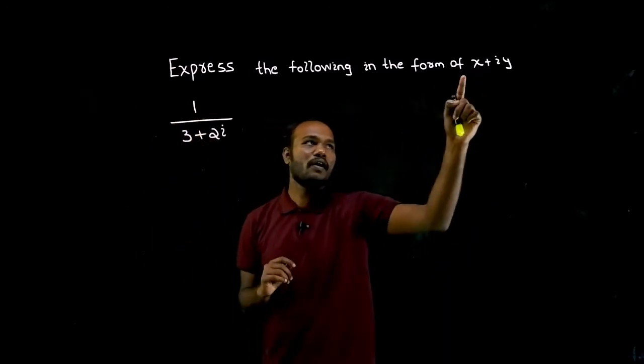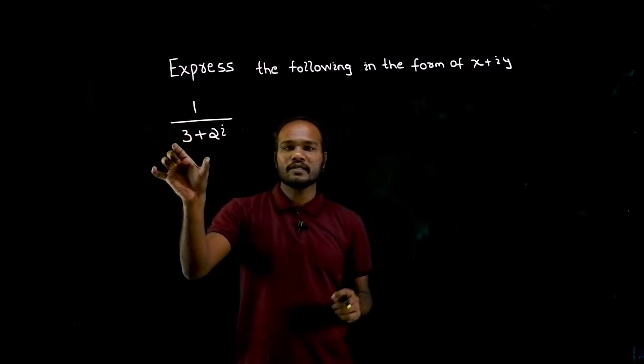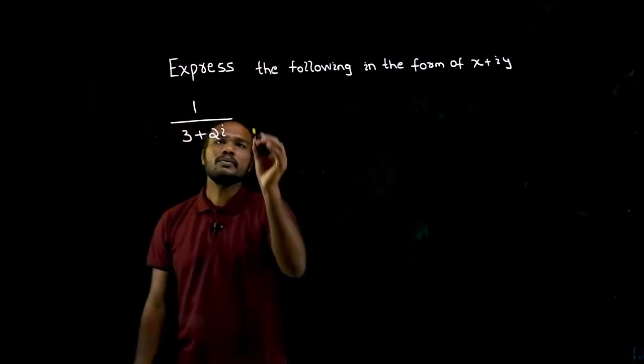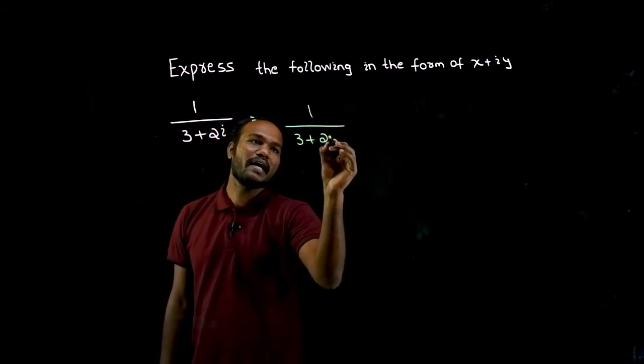See in the numerator we have only one number, in denominator we have one number. So what we need to do, take the question again 1 by 3 plus 2i. What I do, I have to multiply with conjugate.